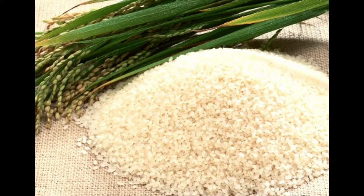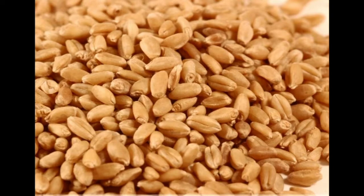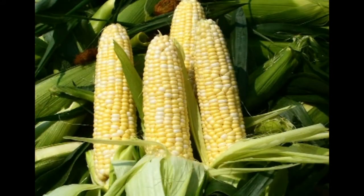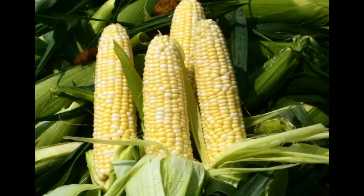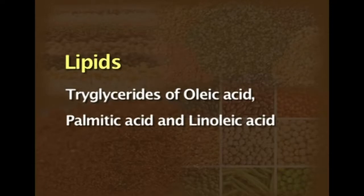Lipids are found to a very small extent of 1 to 6% in the various cereal grains — for example, 1% in rice, 2% in wheat, and the larger concentration of 3% is found in maize. The lipids are mostly triglycerides of oleic, palmitic and linoleic acids and contribute 50% to the requirement of essential fatty acids in our body every day.